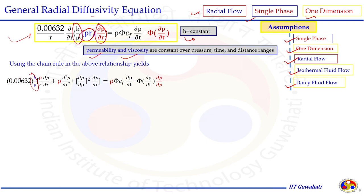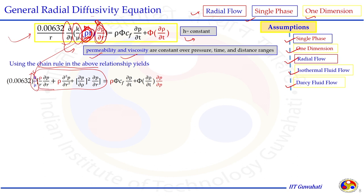With k and μ taken outside the derivative, inside we are left with ρ, r, and ∂p/∂r. These terms can be differentiated with respect to r using chain rules. Treating ρ·r as a product (A and B), we differentiate: A constant times derivative of B, plus B constant times derivative of A. Further, ρ·r includes both ρ and r, so we differentiate once with respect to ρ and once with respect to r to get the expanded expression.